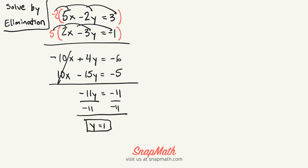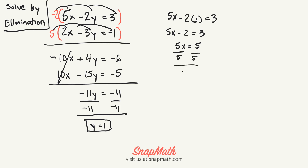Now I've got to pick an equation to plug y back in to solve for x. So I will pick the top one here. So it will be 5x minus 2, and instead of writing y, I'll write what y equals — 3. So 5x minus 2 equals 3. We add 2 to each side, and then we divide by 5, and x equals 1 as well.